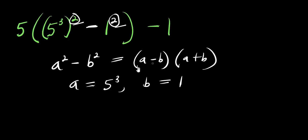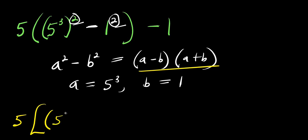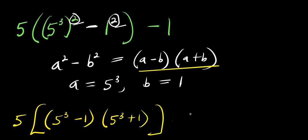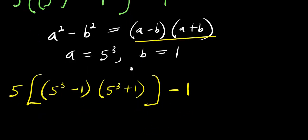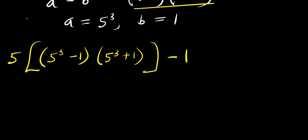I'm going to make use of this. I have my 5 outside the bracket. Then for a minus b, this is 5 to the power of 3 minus 1, times for a plus b, this is 5 to the power of 3 plus 1. Then this is minus 1. Now also remember that 5 to the power of 3 equals 5 times 5 times 5, and this is 5 times 5 is 25, 25 times 5, this is 125.